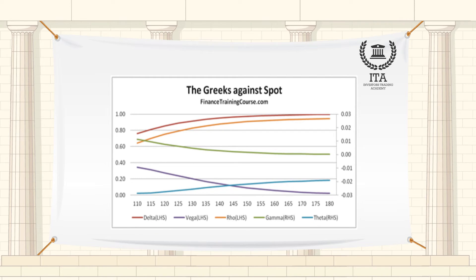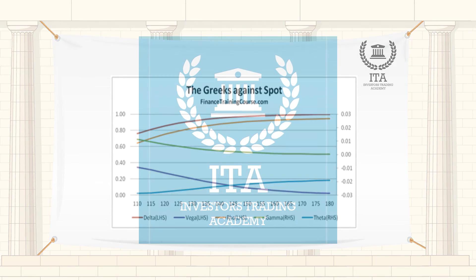In this article, we will take a look at four Greek risk measures: Delta, Theta, Vega, and Gamma, and explain their importance. But first, let's review some related option characteristics that will help you better understand the Greeks.